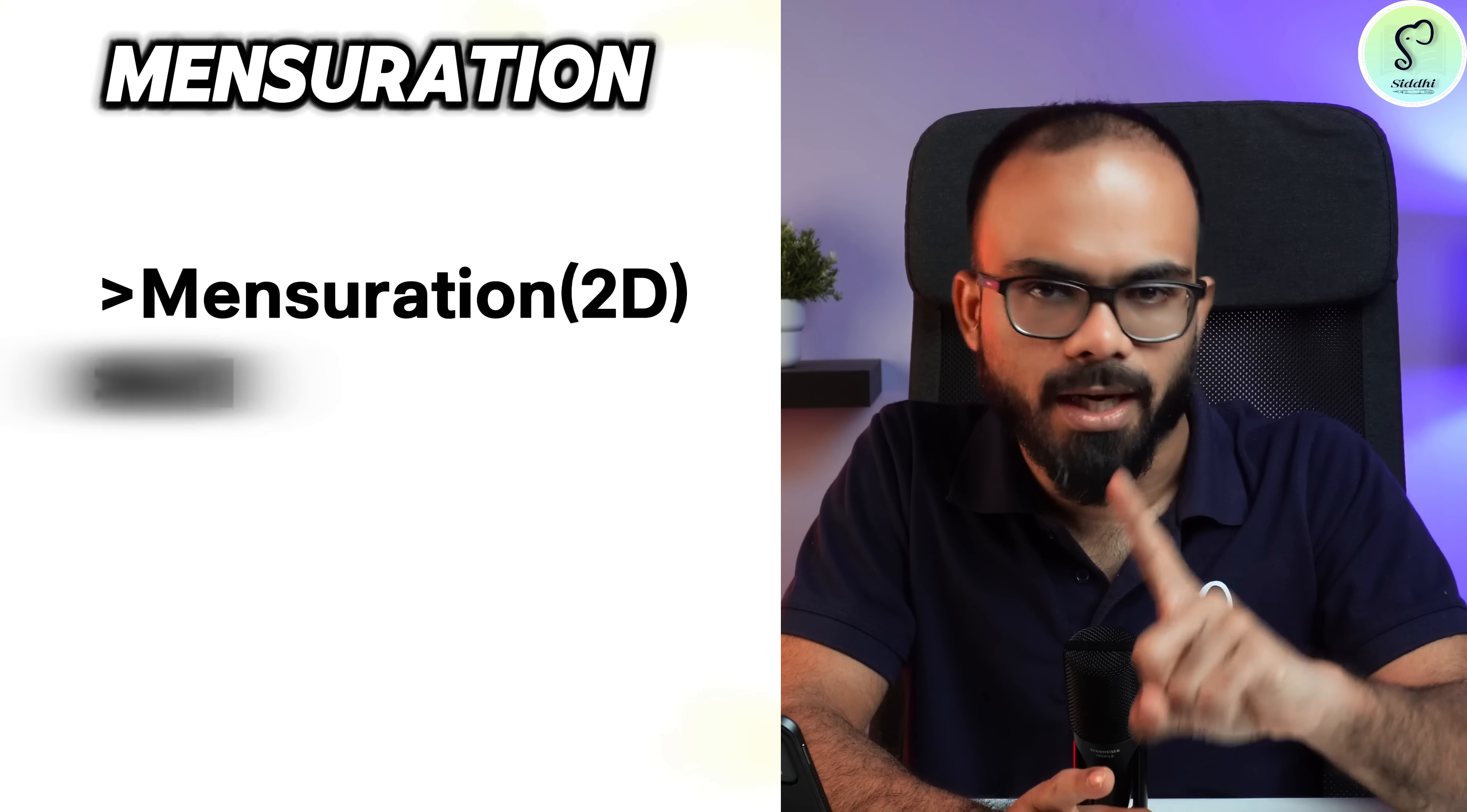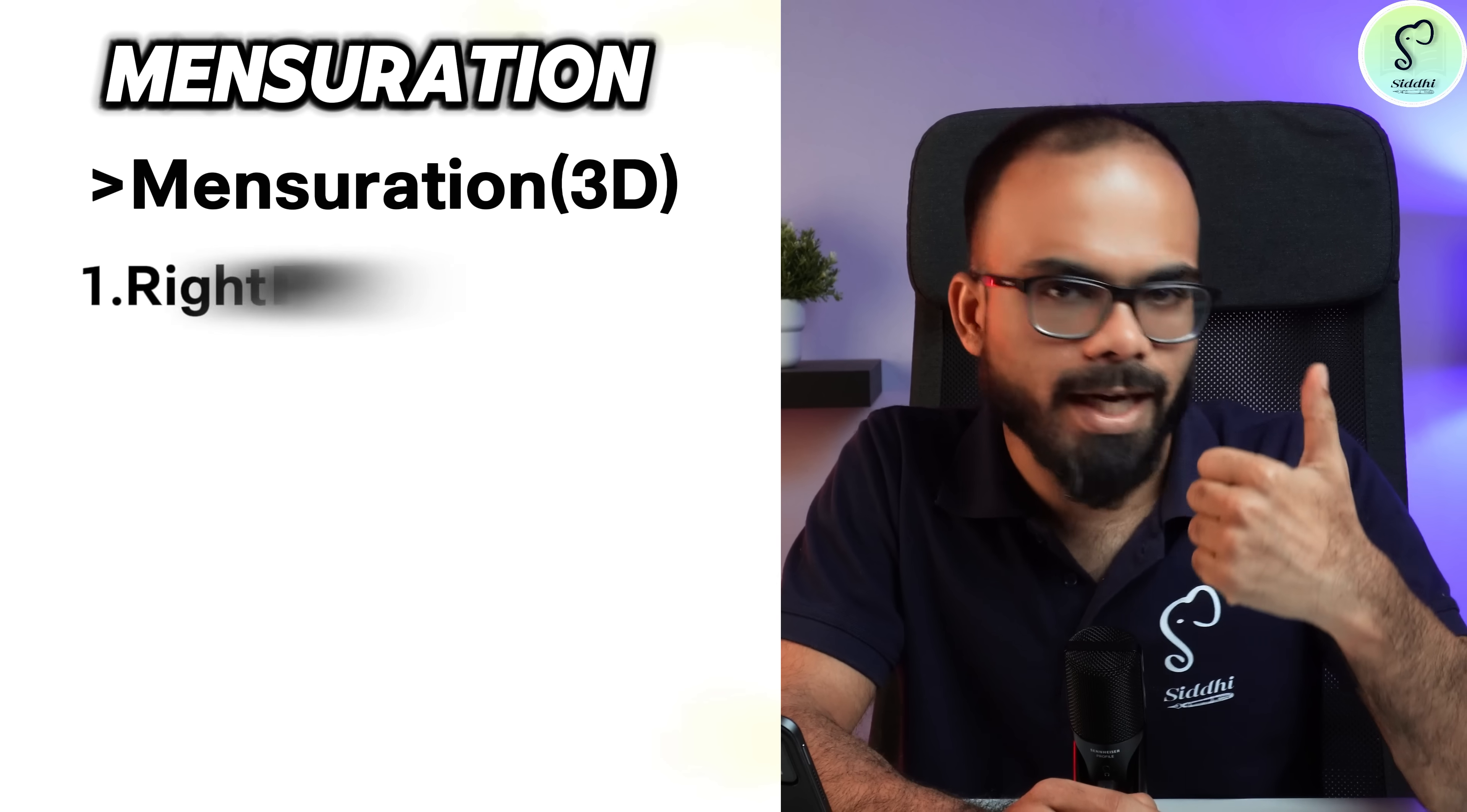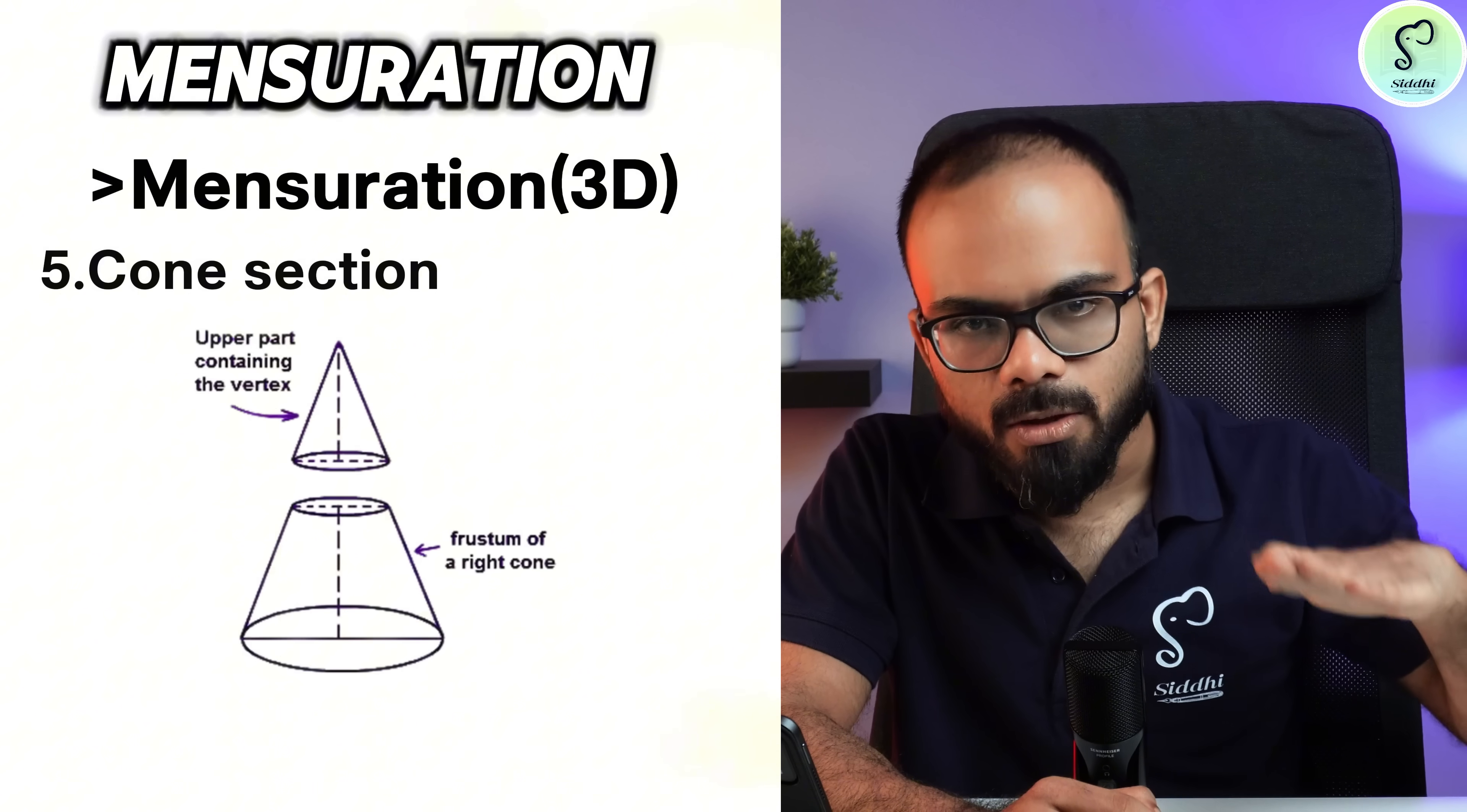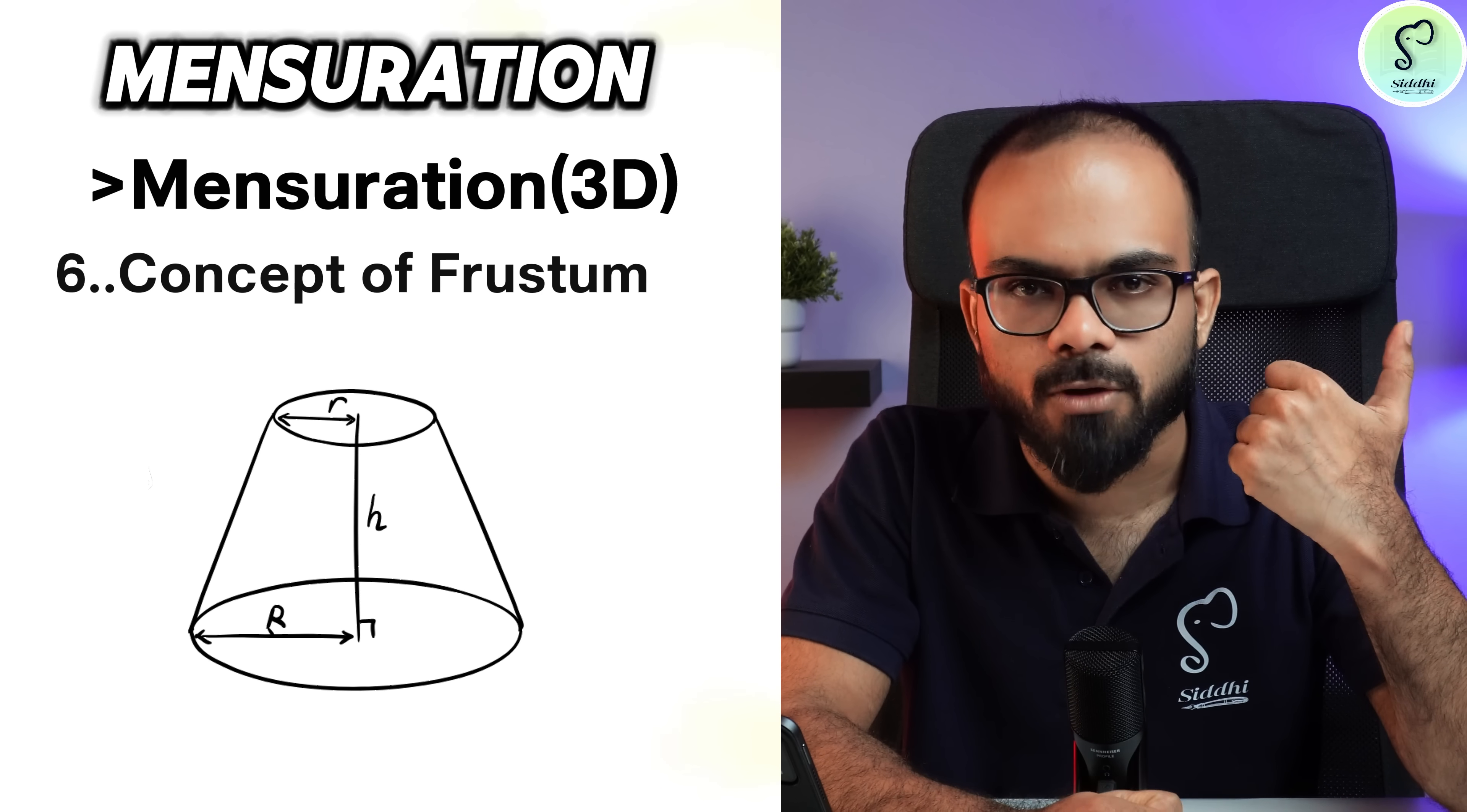In mensuration we have 2D and 3D. Of 2D and 3D, 3D is most important. In 3D: right prism, right pyramid, cone, cylinder. Here a cone is cut into halves with a plane parallel to its base where heights are equal, the next case where volumes are equal, concept of frustum.